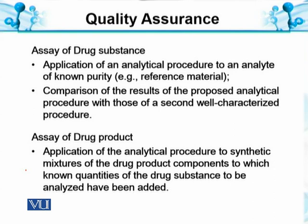For the Assay of Drug Substance, the first approach is the application of the analytical procedure to an analyte of known purity. The second is comparison of the results of the proposed analytical procedure with those of a second, well-characterized procedure — for example, comparing a titration method and a complexometric method with an instrumental method. We also apply the procedure to synthetic mixtures of drug product components to which known quantities of the drug substance to be analyzed have been added, including inactive excipients, to determine analyte concentration.